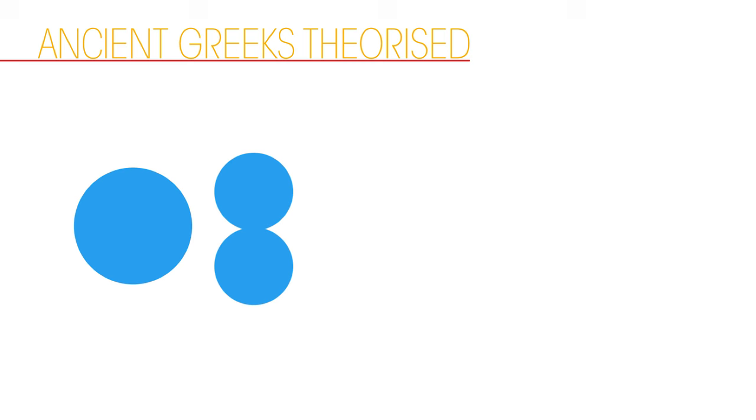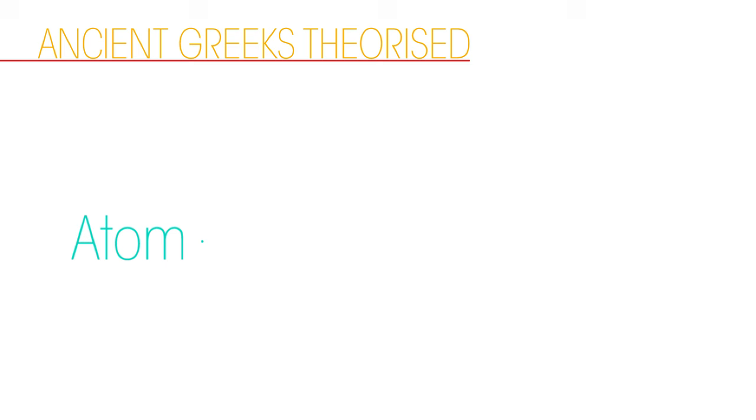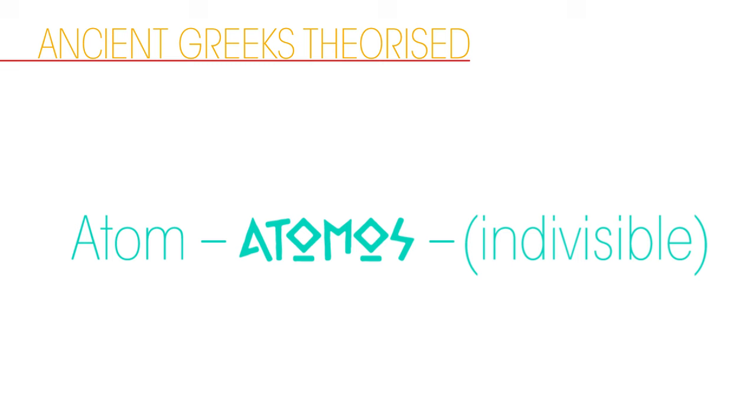The ancient Greeks theorized that all matter could be divided into smaller and smaller units until such a point that there would only be tiny particles left that could not be divided any further. This was the first theory of the atom. Indeed, the word atom comes from the ancient Greek word atomos, which means indivisible.